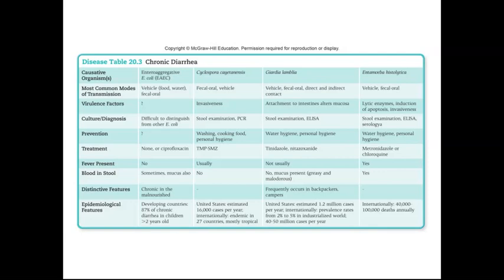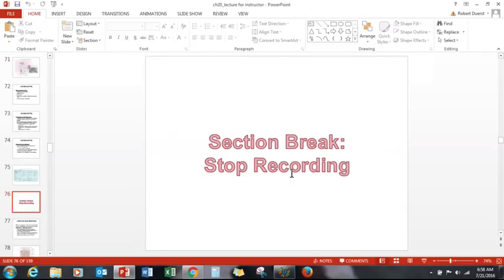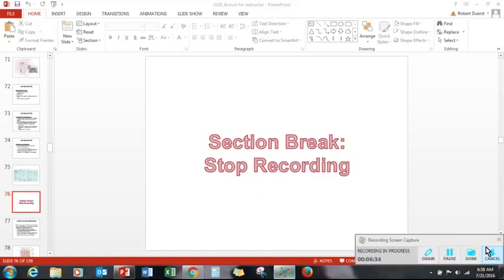In terms of causes of chronic diarrhea, we did not cover enteroaggregative E. coli, Cyclospora, or Entamoeba histolytica. However, the one cause of chronic diarrhea I really want you to focus on for your upcoming test is Giardia lamblia. If you have any questions about chronic diarrhea and food poisoning, please post them to the discussion board or send me an email. Happy studying!